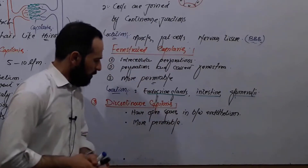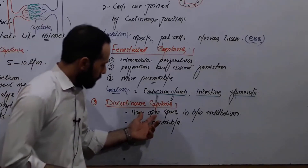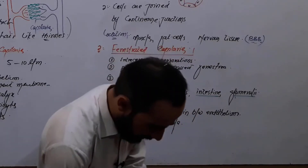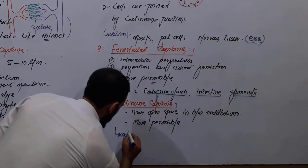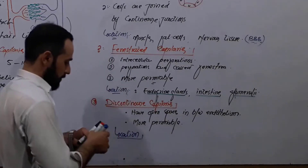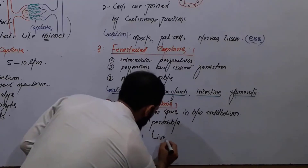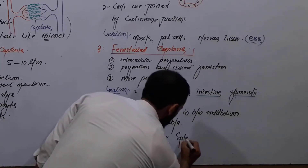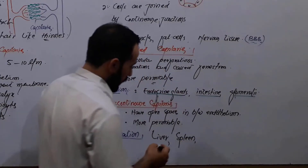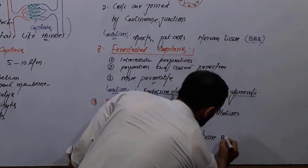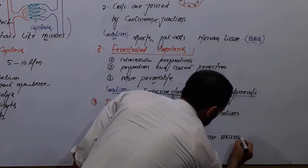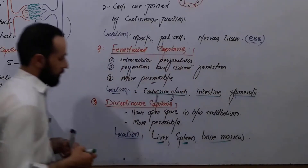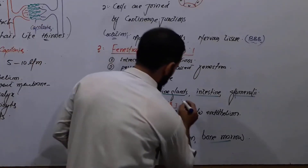The most important thing to remember about discontinuous capillaries is their structure and location. These capillaries are present in the liver, spleen, and bone marrow. They are also called sinusoidal capillaries.